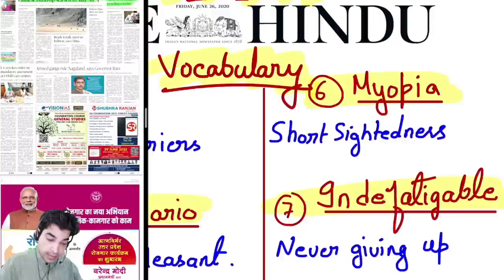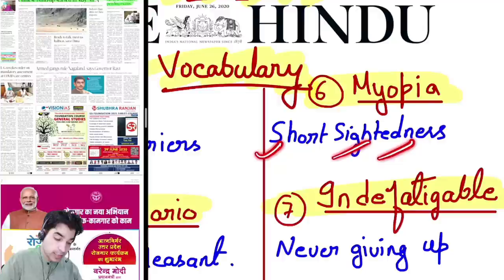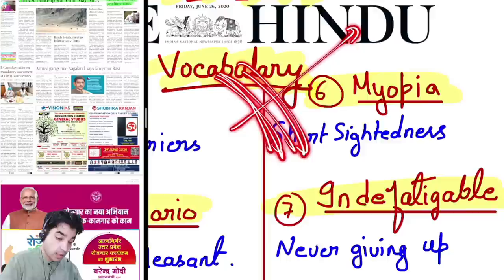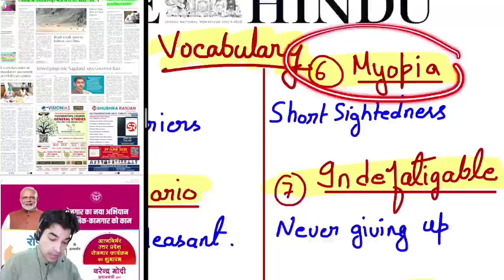'Humongous' means huge in size, enormous. 'Myopia' means short-sightedness — we often can't see far ahead. In decision-making, myopic vision means being penny wise but pound foolish — you gain a little benefit but in that process, large losses occur.